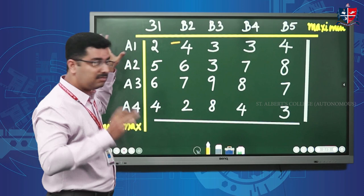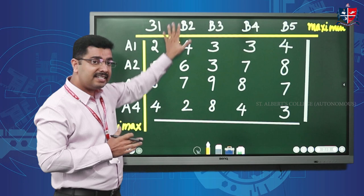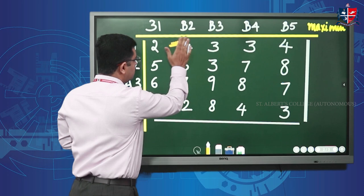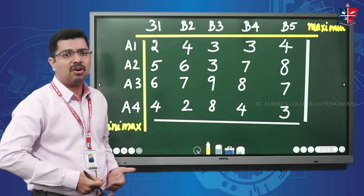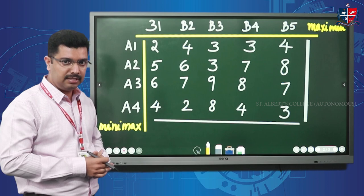When Player A takes strategy A1 and Player B takes strategy B2, a negative value is of advantage to Player B. In this question, Player A has four strategies and Player B has five strategies. We will solve this using the minimax, maximin, or saddle point technique.